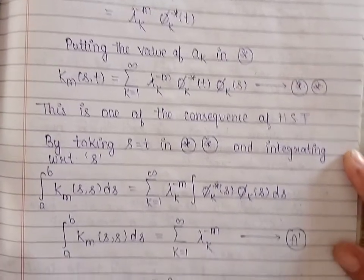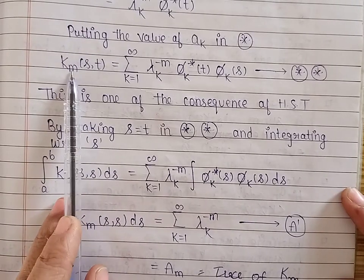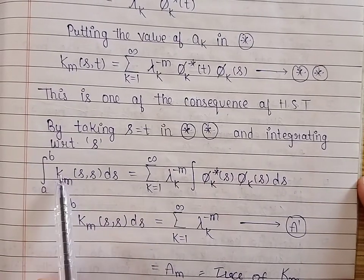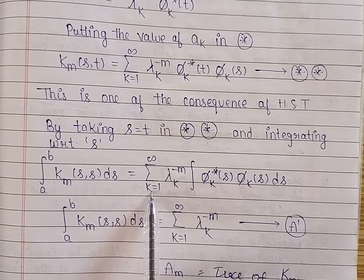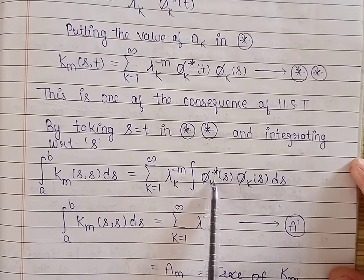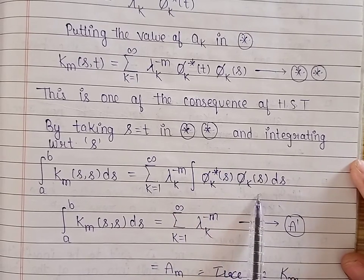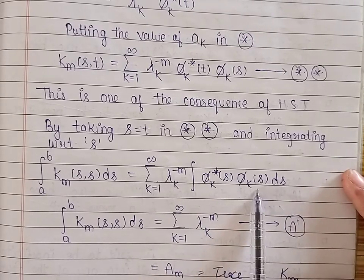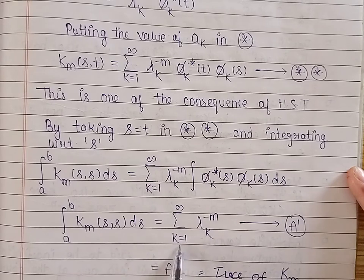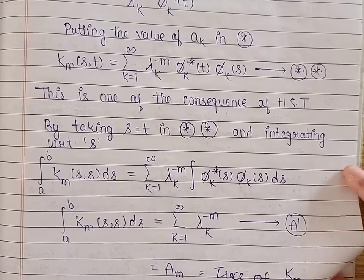If we take in particular s equal to t in this form and integrate with respect to s, then replacing t by s and integrating from a to b, the left side becomes the integral from a to b of K_m(s,s). On the right side we have the summation where k varies from 1 to infinity of lambda_k raised to the power minus m times the integral of phi_k conjugate(s) times phi_k(s). Since phi_k is an orthonormal sequence, the norm of each function is 1, giving summation of lambda_k to the power minus m, which is the trace of the iterative kernel K_m.